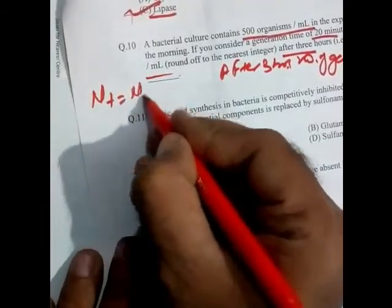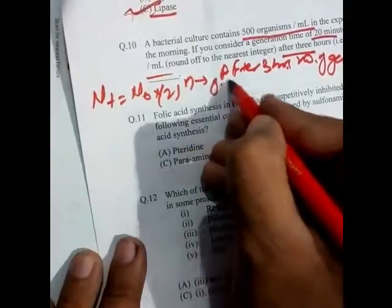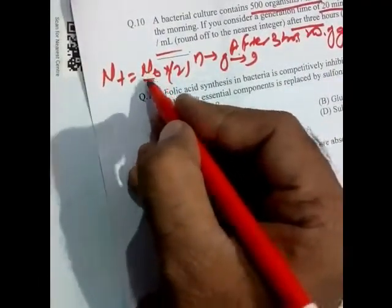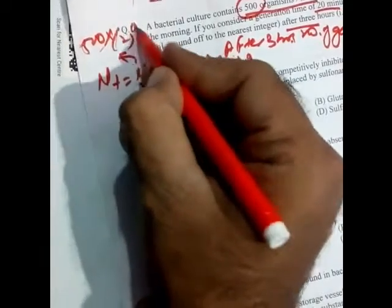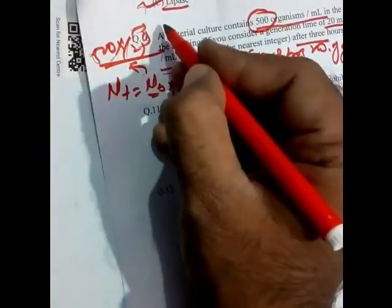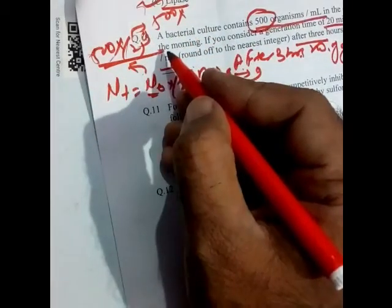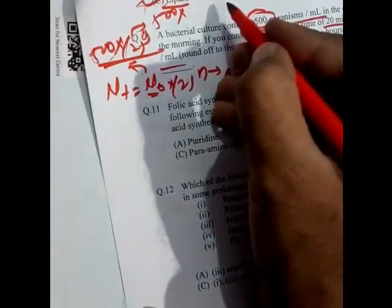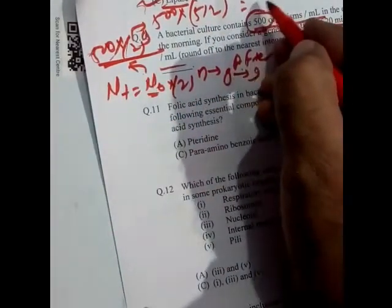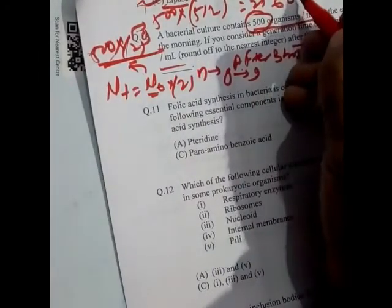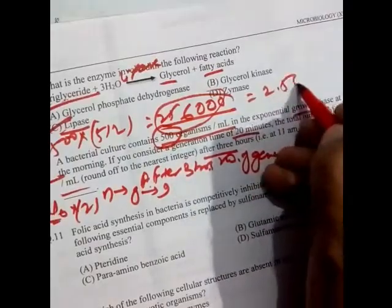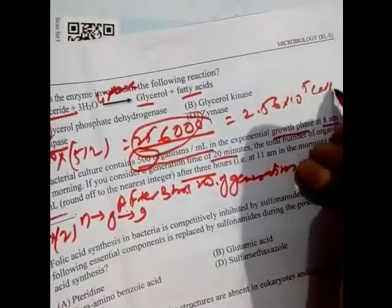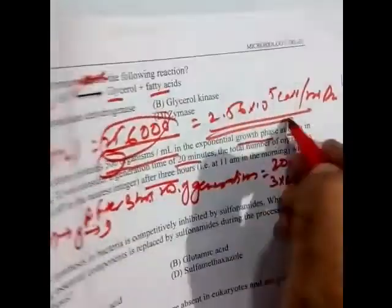Using the formula Nt = N0 × 2^n, where n = 9 generations and N0 = 500 organisms, we get Nt = 500 × 2^9 = 500 × 512 = 256,000, which equals 2.56 × 10^5 cells per mL. That is the final answer.